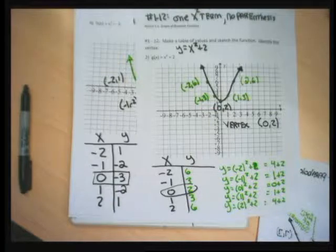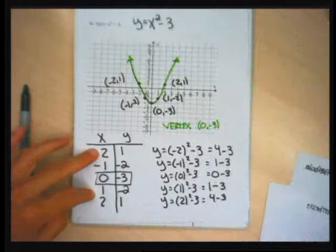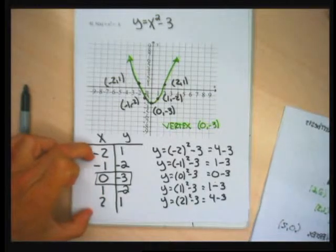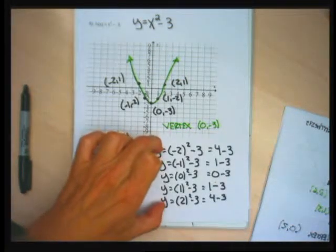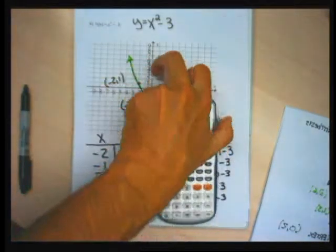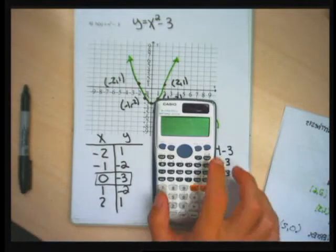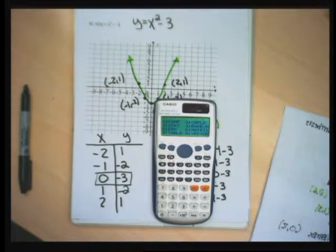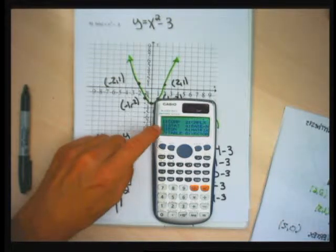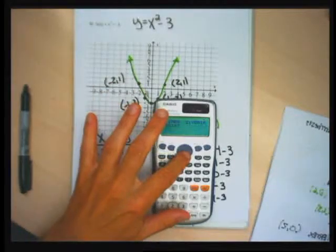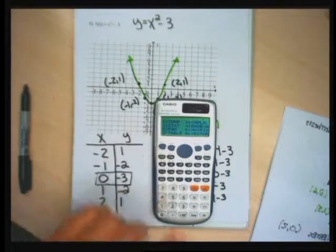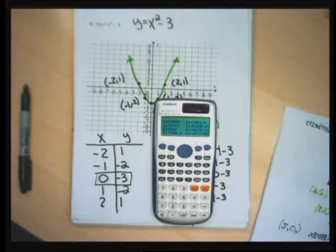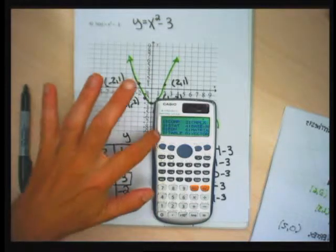The tedious part of doing these graphs is creating the tables — it's just not that hard but it is time-consuming. I'm going to show you how to get these tables on your calculator. On my calculator I hit the Mode button and option 7 says 'table.' If you don't see 'table,' arrow around to find it. If you can't find it, come visit me and I'll help you find it — it's going to save you a lot of time.